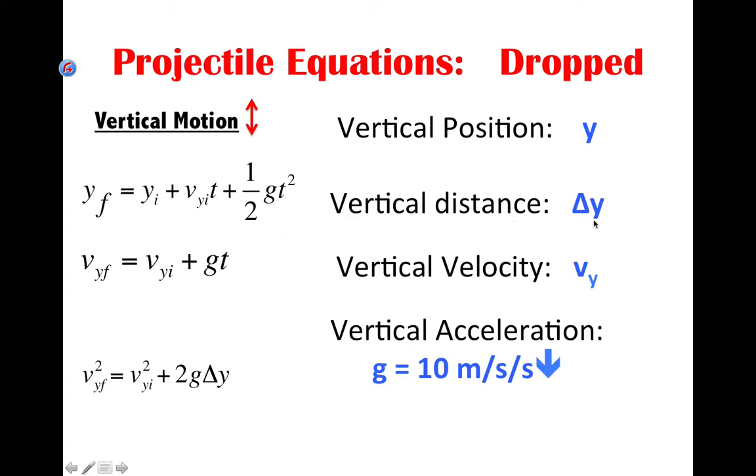Then a vertical change in position or a distance is delta Y, and that's given in this equation down here at the bottom. It's the only place you'll see the delta Y show up.